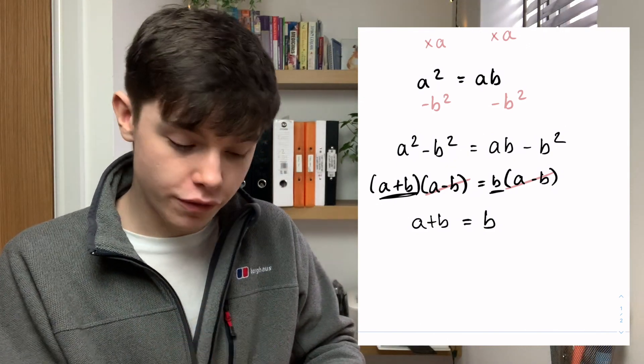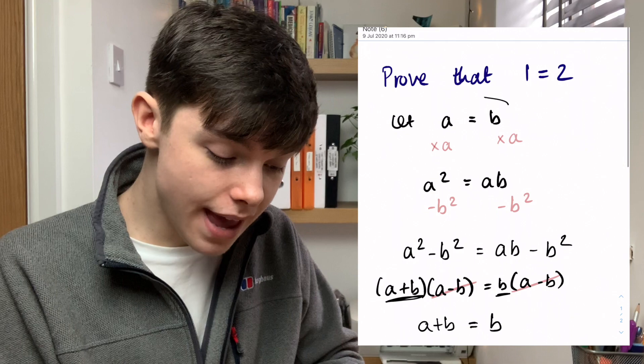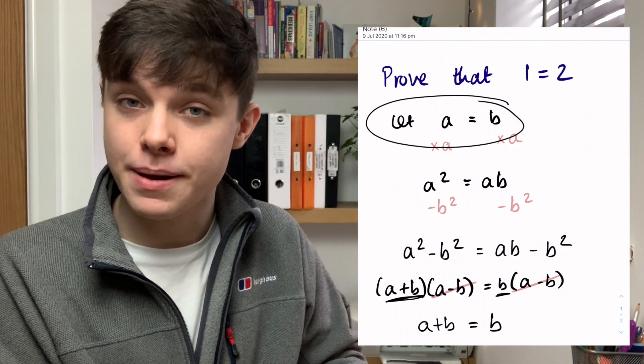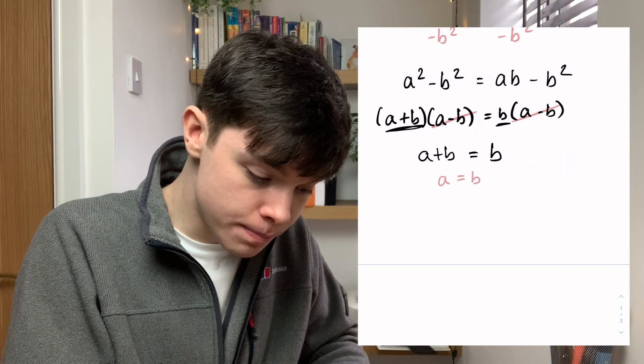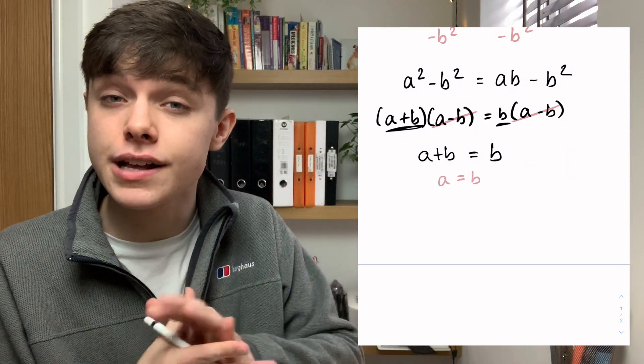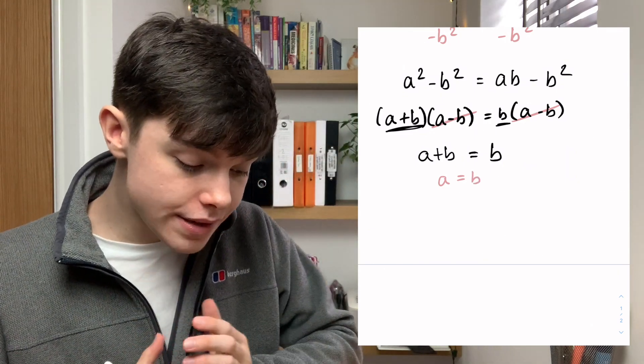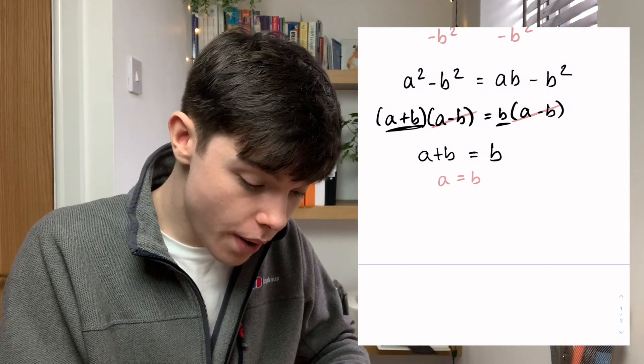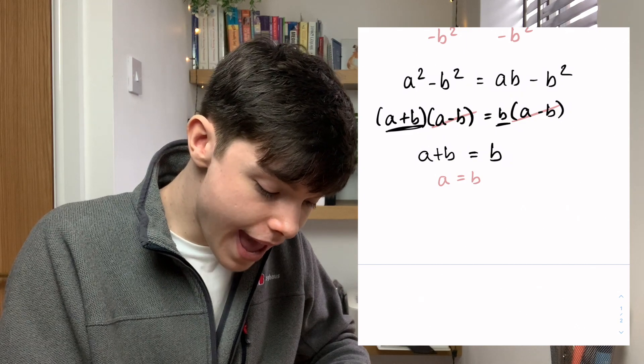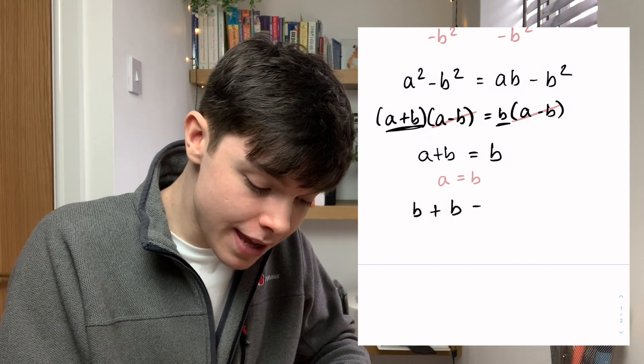Now at the start of this proof we said let a equal b. So we know that a equals b because we said that at the start of the proof. So what I can do is I can replace a with b in this equation here. So what I can get is b + b equals b.